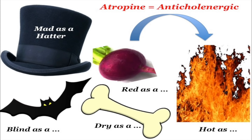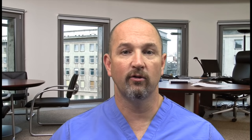Know the anticholinergic side effects — lots of medicines have them. The mnemonic is: blind as a bat, mad as a hatter, dry as a bone, red as a beet, hot as heat. Atropine is a classic medicine in that class. Blind as a bat means dilated pupils; mad as a hatter means they become psychotic; dry as a bone means no oral secretions, urinary retention, and constipation; red as a beet means they get flushed; hot as heat means they can have malignant hyperthermia.